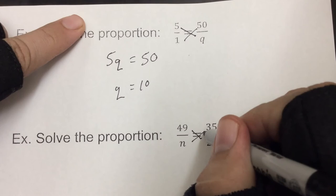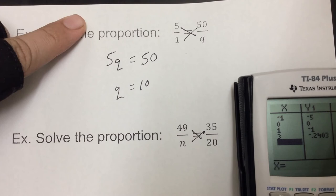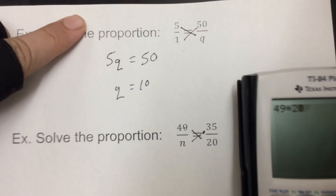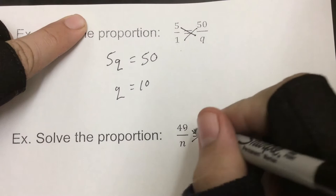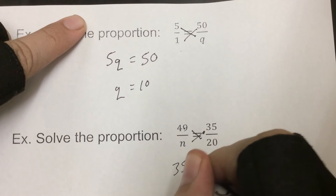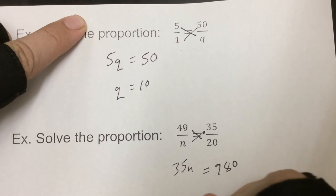So, same sort of idea here. So, this cross, this cross, 49 times 20. Now, I don't know that off the top of my head. So, 49 times 20 is 980. So, this cross gives us 980. This cross would be 35N. So, again, we would divide by 35. And so, N equals 28. That's how it's going to roll.